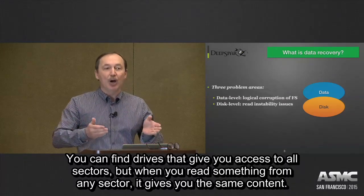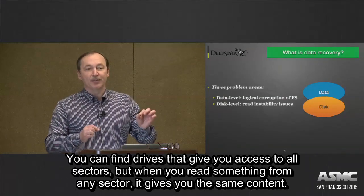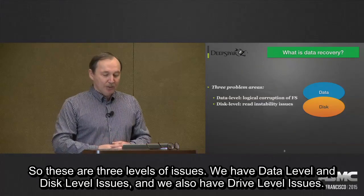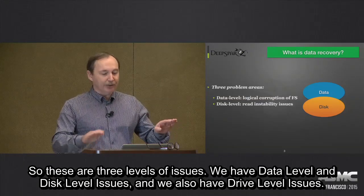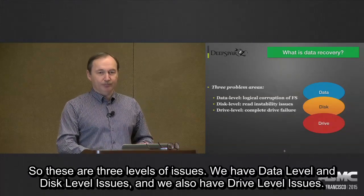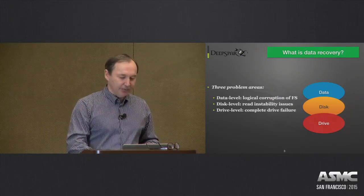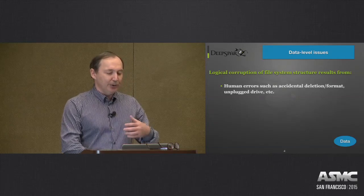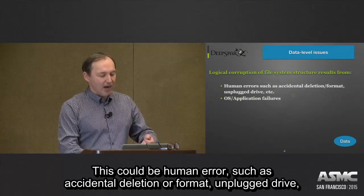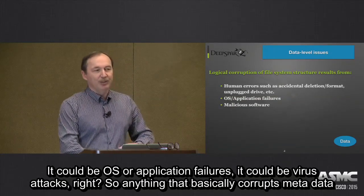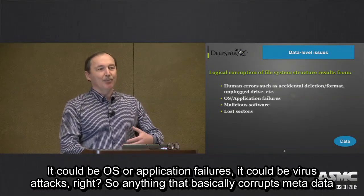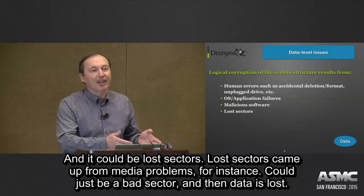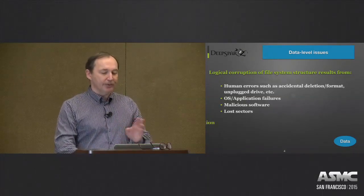You can even find drives that give you access to all sectors, but when you read from any sector it gives you the same content — that's also a failure at the drive level. So to recap: data level issues include logical corruption of the file system — human error such as accidental deletion, format, or unplugged drive; OS or application failures; virus attacks; anything that corrupts metadata. It could also be lost sectors resulting from media problems or bad sectors. All of this is referred to as data level issues, and we're talking about cases with healthy drives with logical corruption.